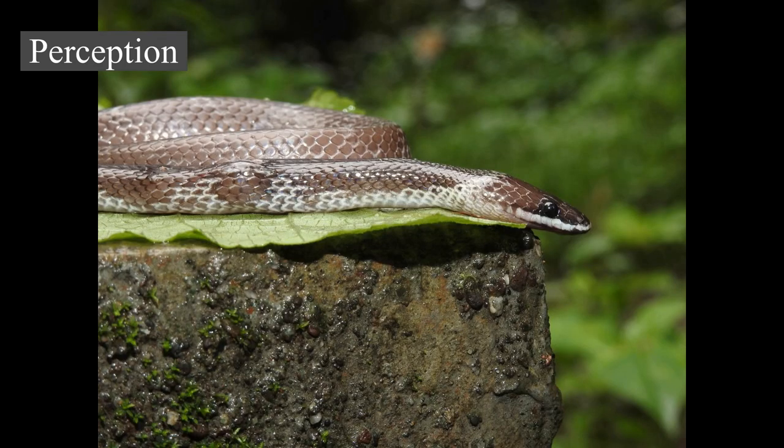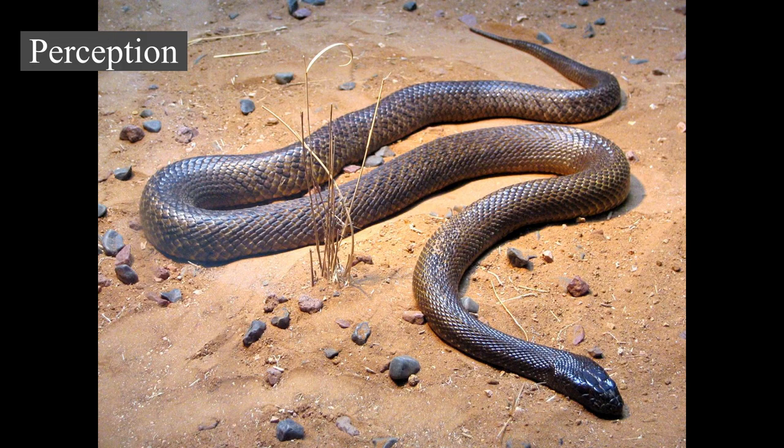The fork in the tongue provides a sort of directional sense of smell and taste simultaneously. The snake's tongue is constantly in motion, sampling particles from the air, ground, and water, analyzing the chemicals found and determining the presence of prey or predators in the local environment. In water-dwelling snakes, such as the anaconda, the tongue functions efficiently underwater. The underside of a snake is very sensitive to vibration, allowing the snake to detect approaching animals by sensing faint vibrations in the ground.